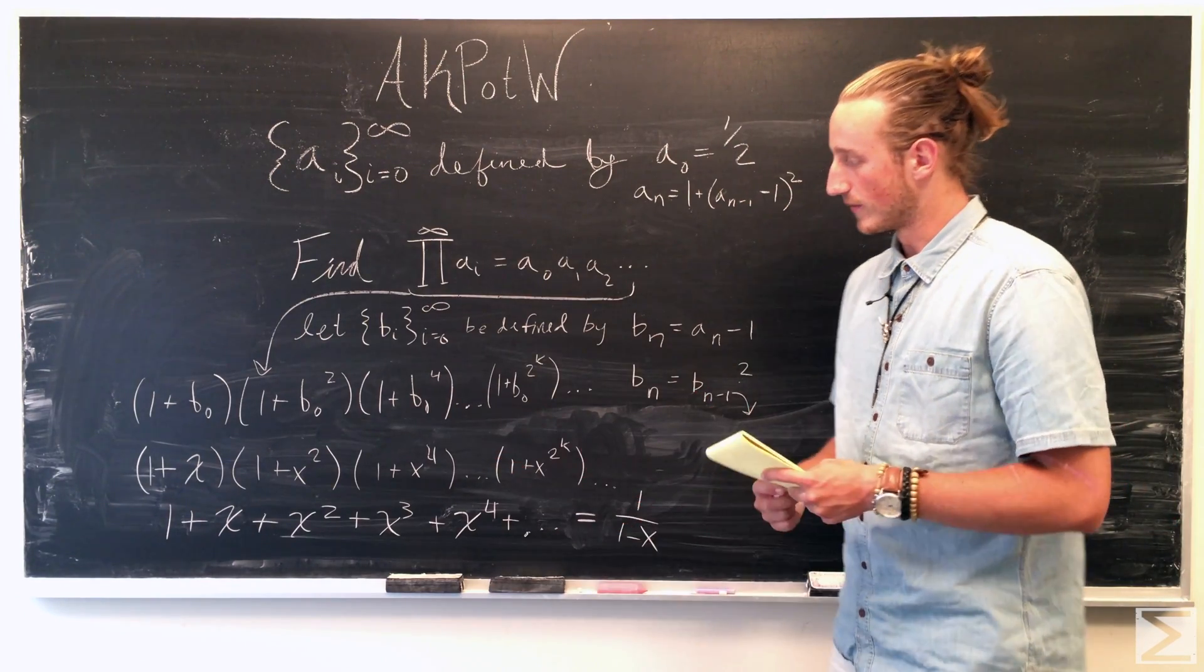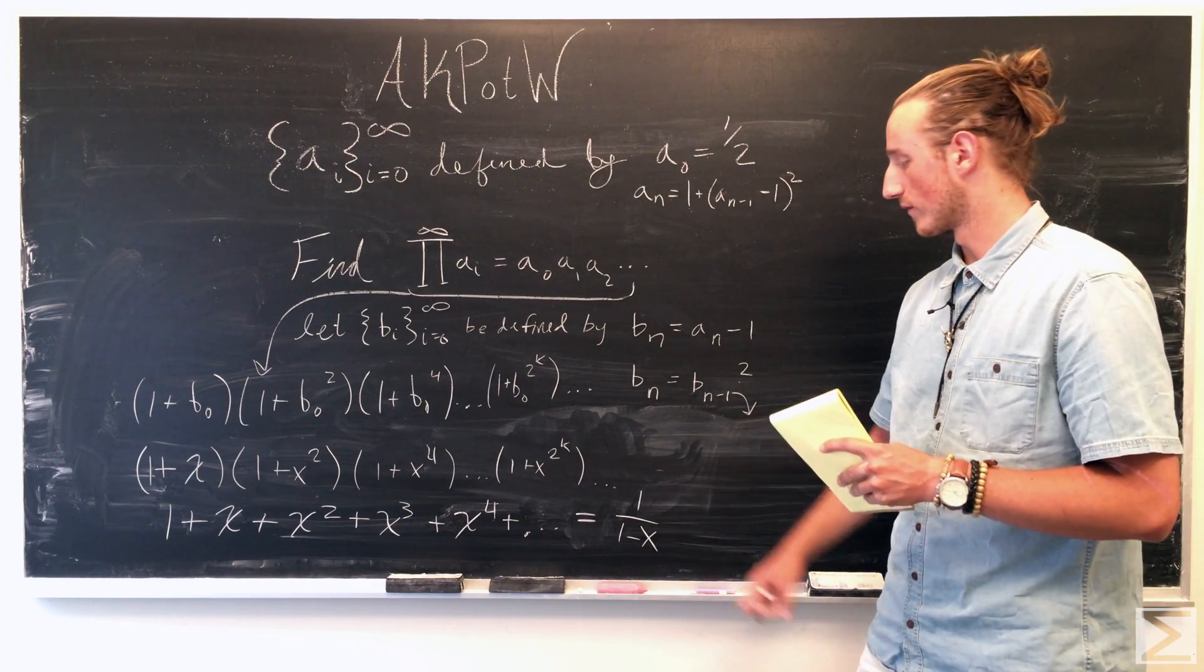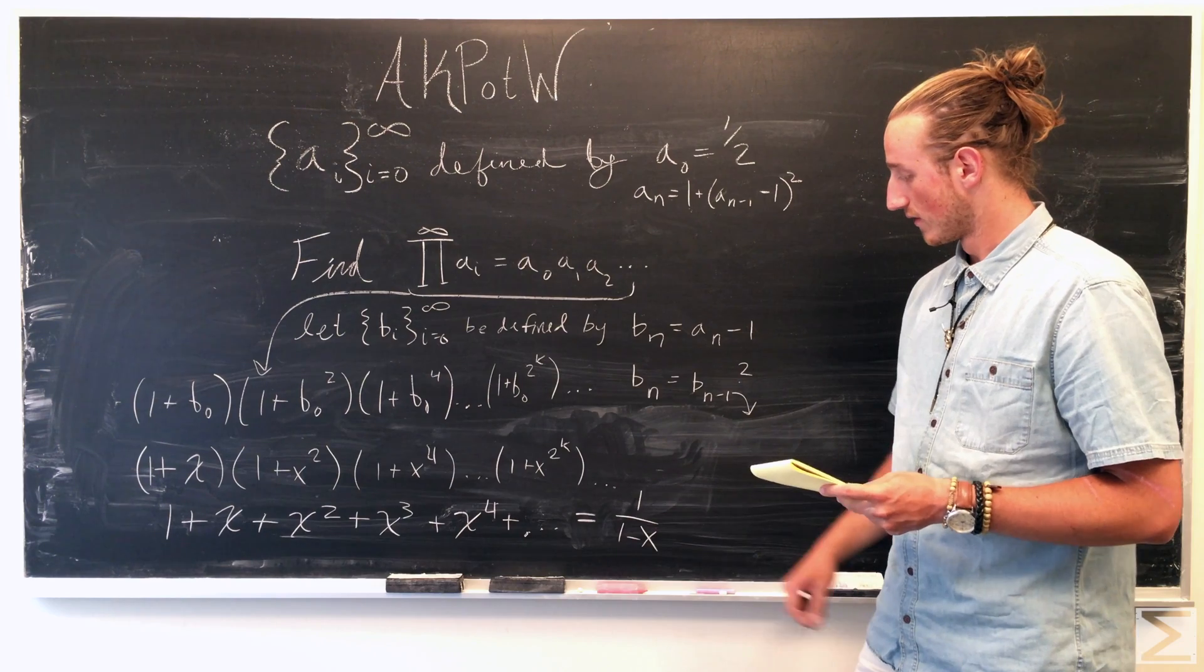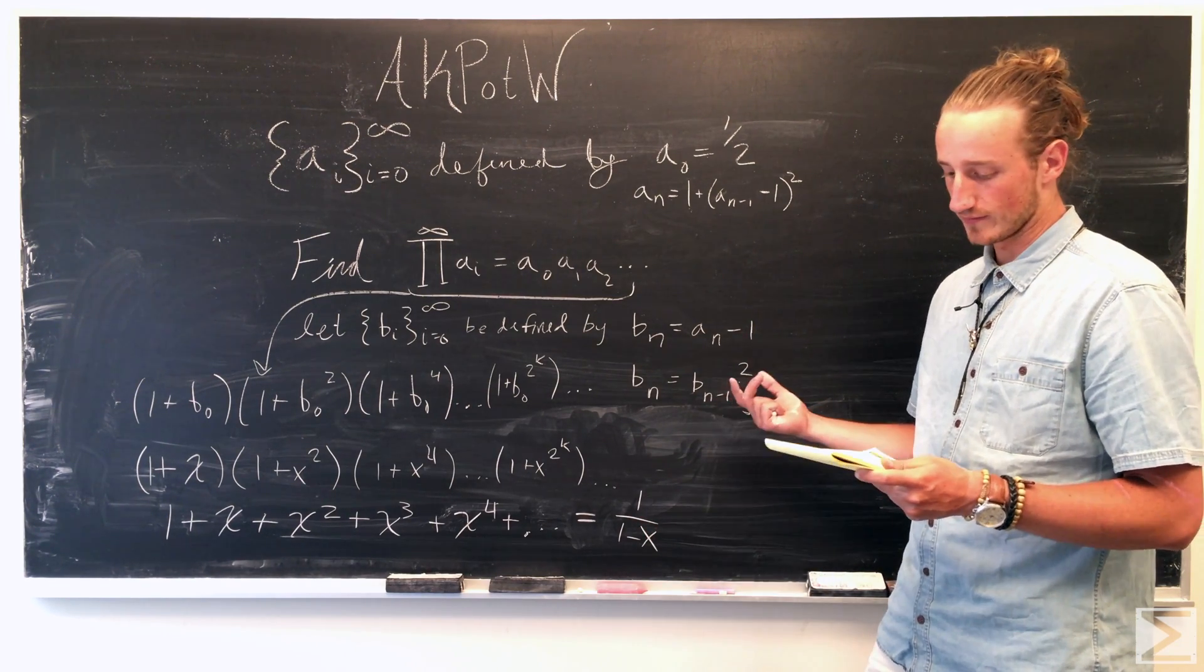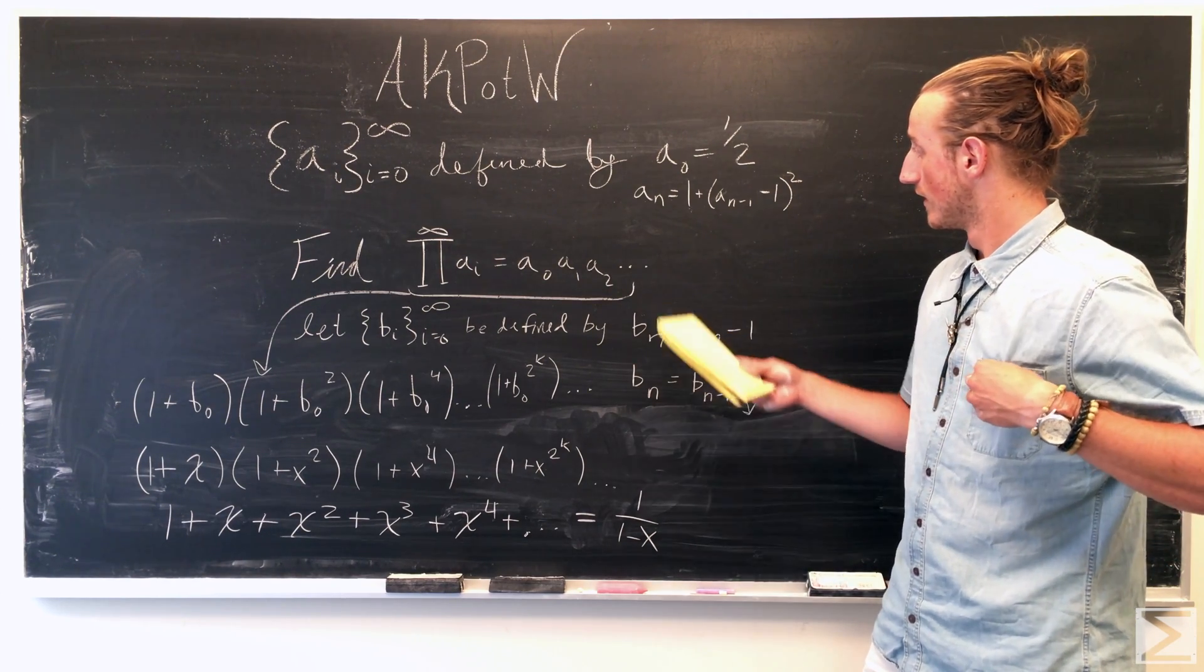And then we know that this sum will converge to one over one minus x. And so then we can just plug in one over one minus x, and our x here is going to be just a, a naught.